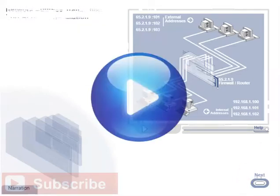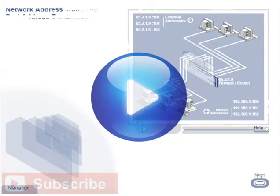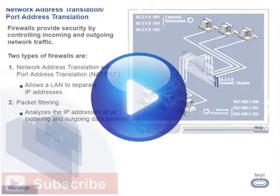Welcome to Network Address Translation, Port Address Translation. Firewalls provide network security by controlling incoming and outgoing network traffic. Two types of firewalls that provide essential services for network security are Network Address Translation with Port Address Translation, called NAT and PAT, and Packet Filtering.